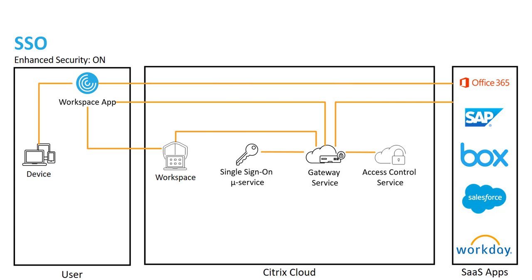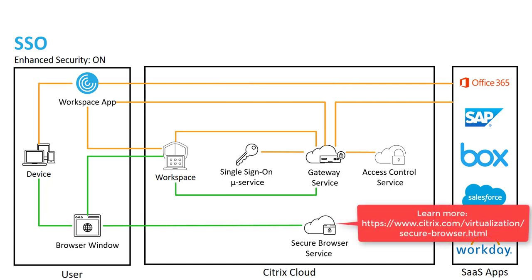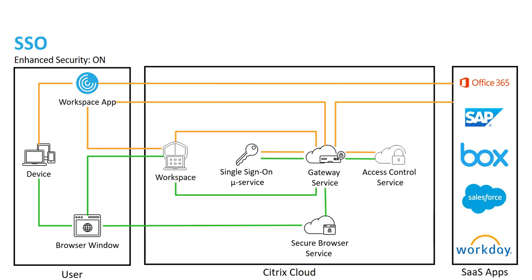What about a scenario where enhanced security is enabled but Workspace app is not installed on the endpoint device? In this instance, we're going to use the local browser. Our local browser using Workspace web will authenticate to our workspace and we'll get a list of applications. When the user selects an application, that request is sent to the gateway service, and this time the gateway service responds back with a one-time use URL and the preferred browser — the secure browser service. The secure browser service initiates a connection to the gateway service, requests an assertion from the single sign-on microservice as well as the enhanced security policies from the Access Control service. The secure browser then gets redirected to the SaaS app logon page where that assertion is presented, and the SaaS app contacts the gateway service to validate the assertion and authenticates the user.